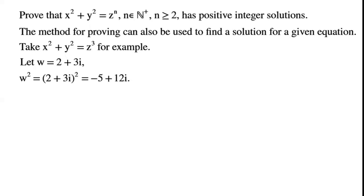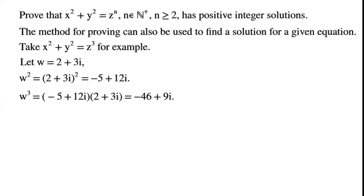We compute w³ where w = 2 + 3i. This equals (-5 + 12i)(2 + 3i), which is equal to -46 + 9i.